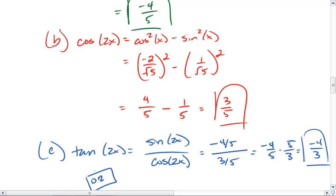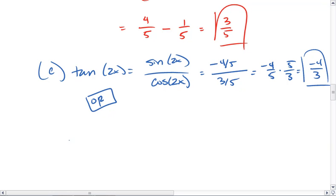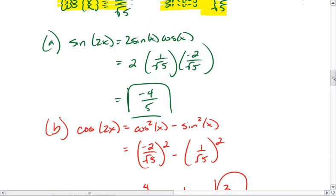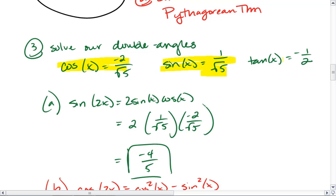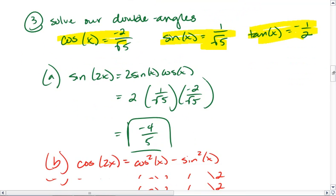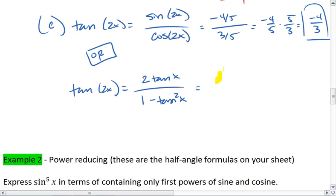Or, you can use the formula. We can see that tan of 2x equals 2 tan x all over 1 minus tan squared x. Our tangent value is negative 1 half. So we get 2 times negative 1 half, all over 1 minus negative 1 half squared.